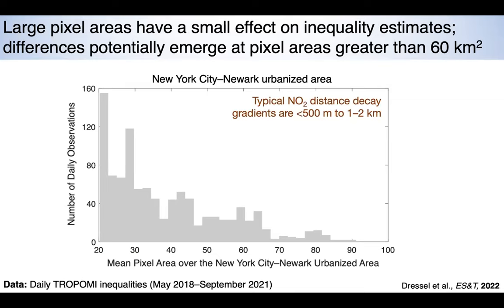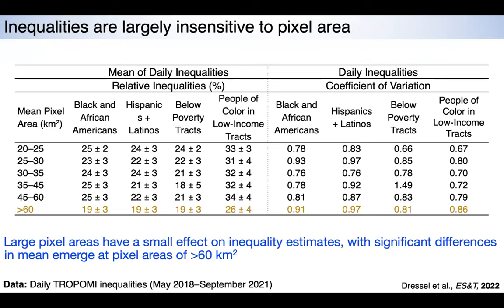Looking at all daily observations over a four-year period in New York City with a wide range of mean pixel areas, we find really no resolution dependence until pixels get very large. This is very useful for decision making — it suggests these estimates aren't that sensitive to resolution. This field has been preoccupied with achieving very high spatial resolution, but our work shows that's really not necessary.